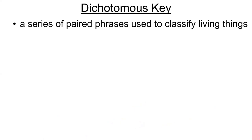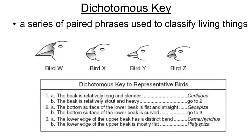We can use a type of tool called a dichotomous key to help us distinguish between species. It's just really a series of paired phrases — 'di' means two — so you follow a set of paired phrases to work through and figure out which species is which based on the characteristics you're observing. An example of a dichotomous key has already been created to help you distinguish between these bird species.